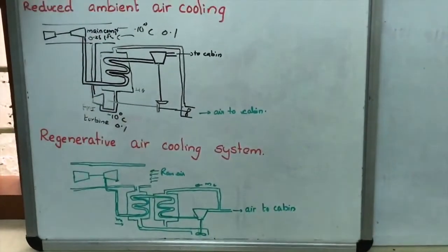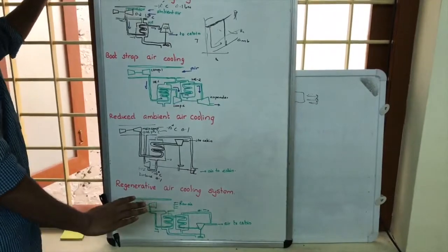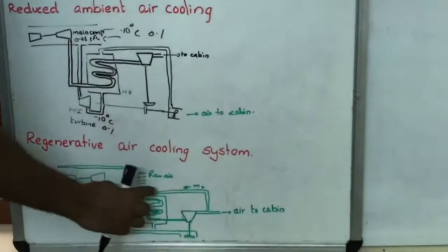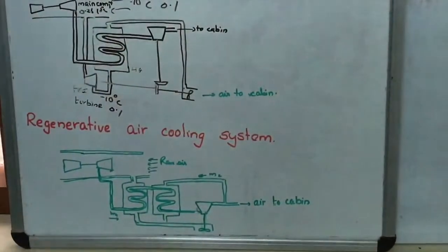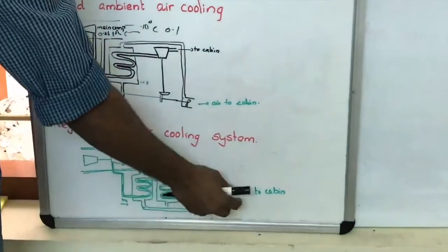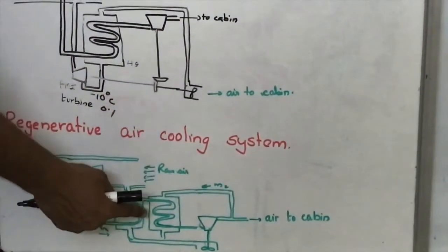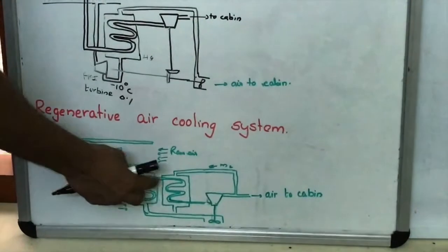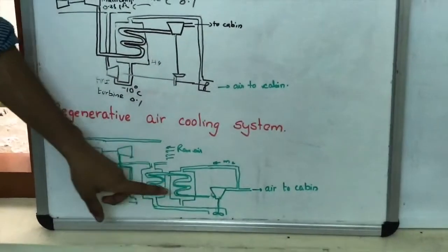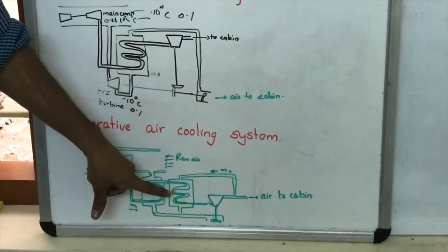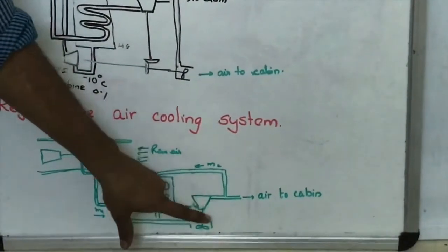In the regenerative air cooling system, the air is first passed through a heat exchanger, then through a second heat exchanger, and then through a turbine. After the turbine, the air is sent to the cabin. However, a portion of this air that is fed to the cabin is taken back and used to exchange heat in the second heat exchanger. So the second heat exchanger is supplied with cold air from the turbine outlet.